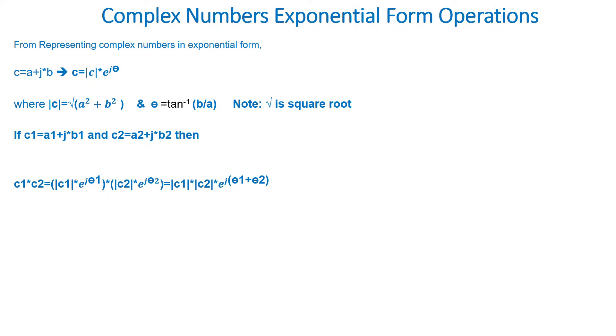C1 times C2 is equal to the magnitude of C1 times e to the power of j times theta 1, the whole thing times the magnitude of C2 times e to the power of j theta 2, which can be reduced to...